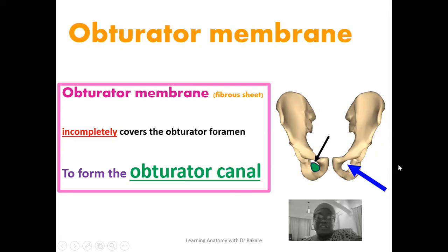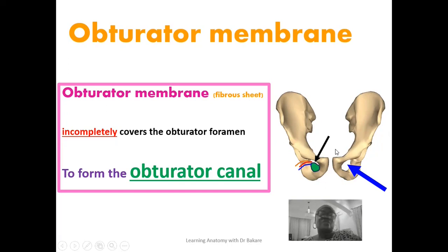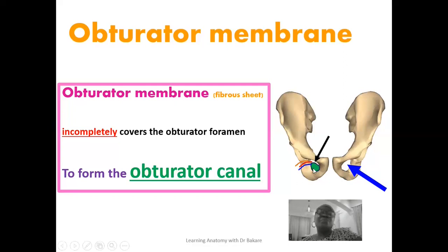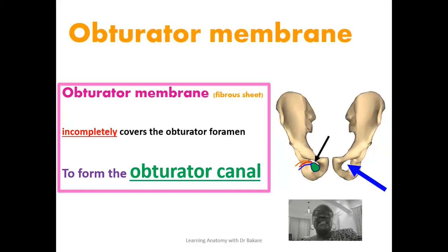This canal is created to allow for the passage of some vessels. You have the passage of the obturator artery, the obturator vein, and the obturator nerve — the obturator vessels using this canal as a means to exit the pelvic cavity. The obturator artery is a branch of the internal iliac artery and needs to exit the space to supply regions outside. The obturator nerve is one of the branches from the lumbar plexus and passes through this canal to innervate structures outside the pelvic cavity.